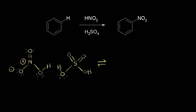Here's the general reaction for the nitration of benzene. You start off with benzene, and to it you add concentrated nitric and concentrated sulfuric acids. That puts a nitro group onto your benzene ring in place of a proton.